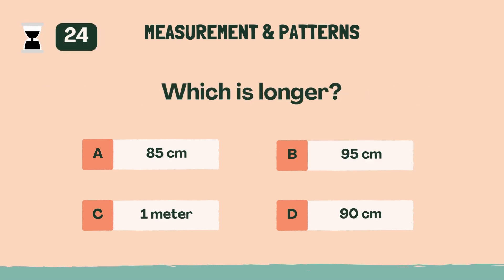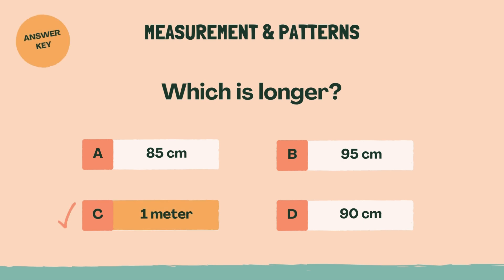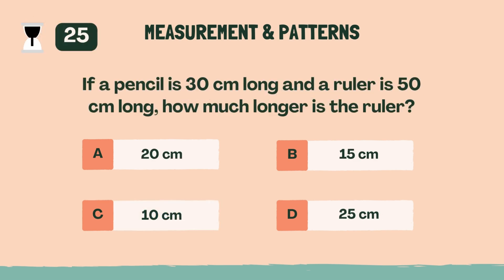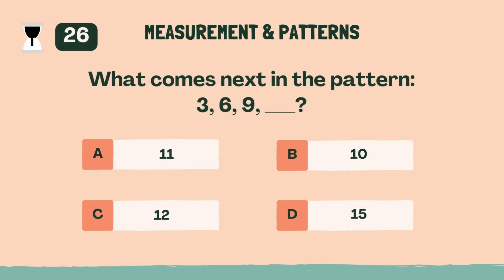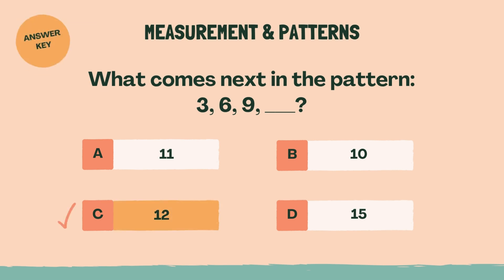Which is longer? C, 1 meter. If a pencil is 30 centimeters long and a ruler is 50 centimeters long, how much longer is the ruler? A, 20 centimeters. What comes next in the pattern: 3, 6, 9? C, 12.